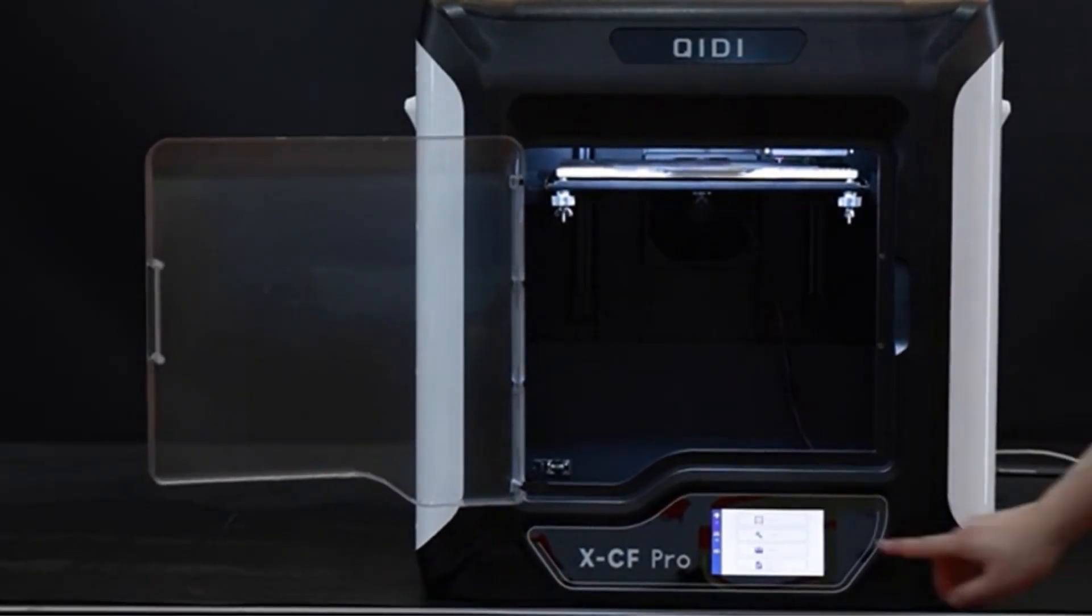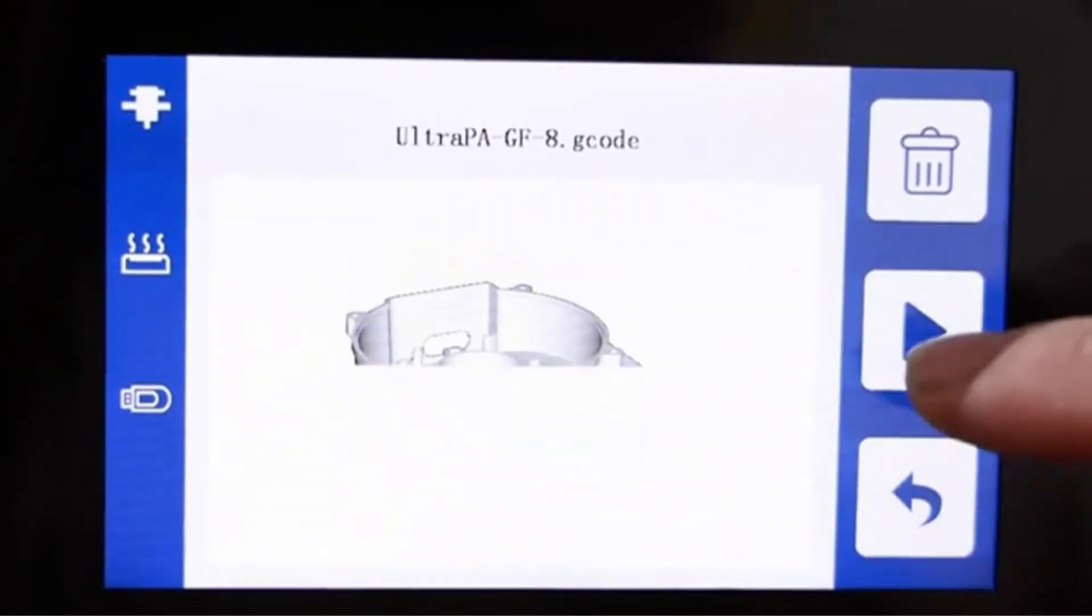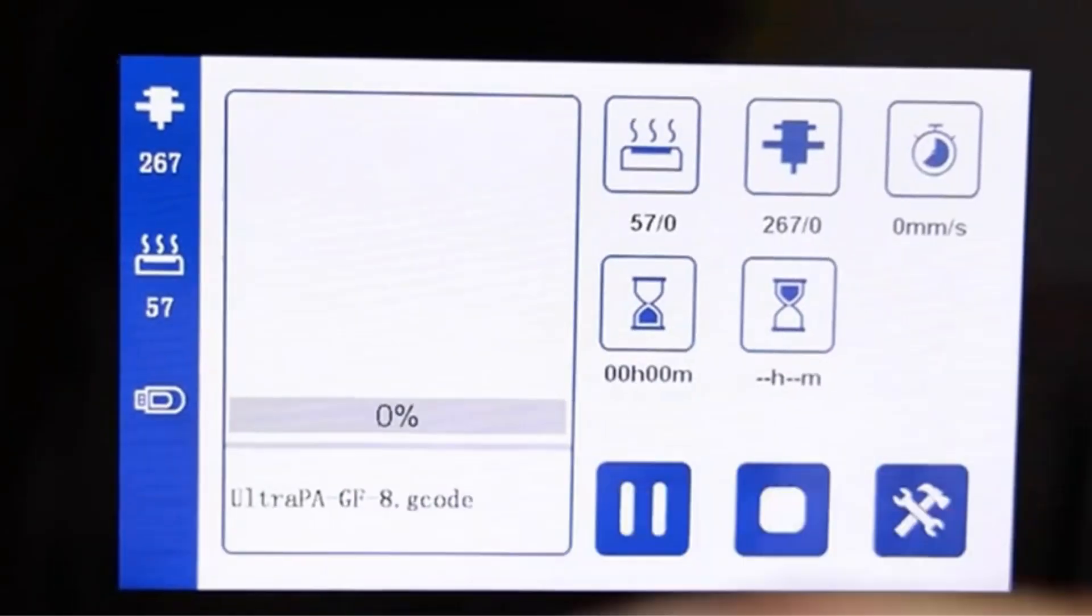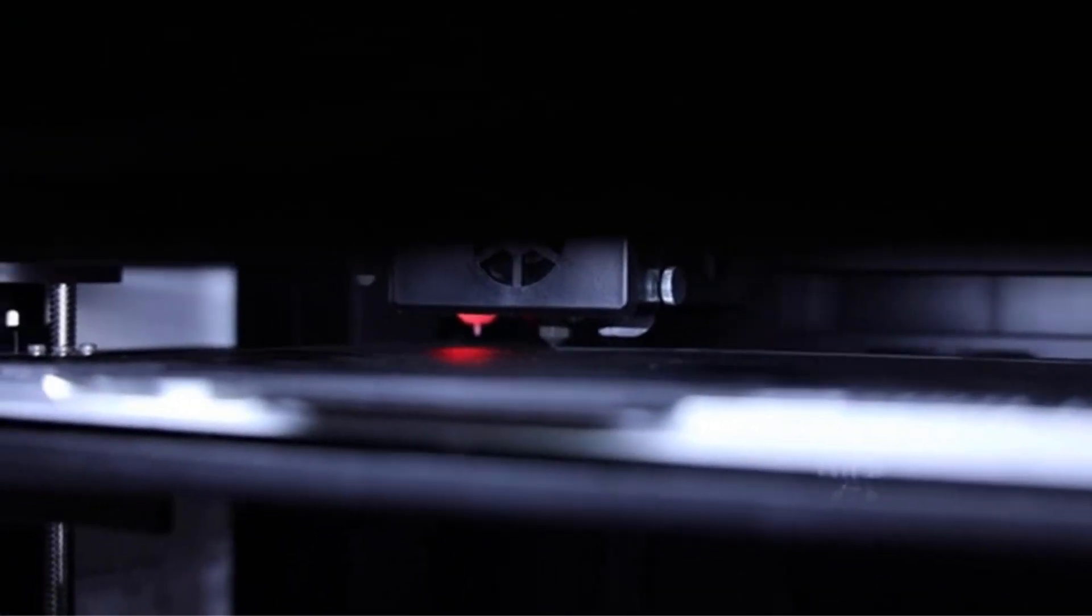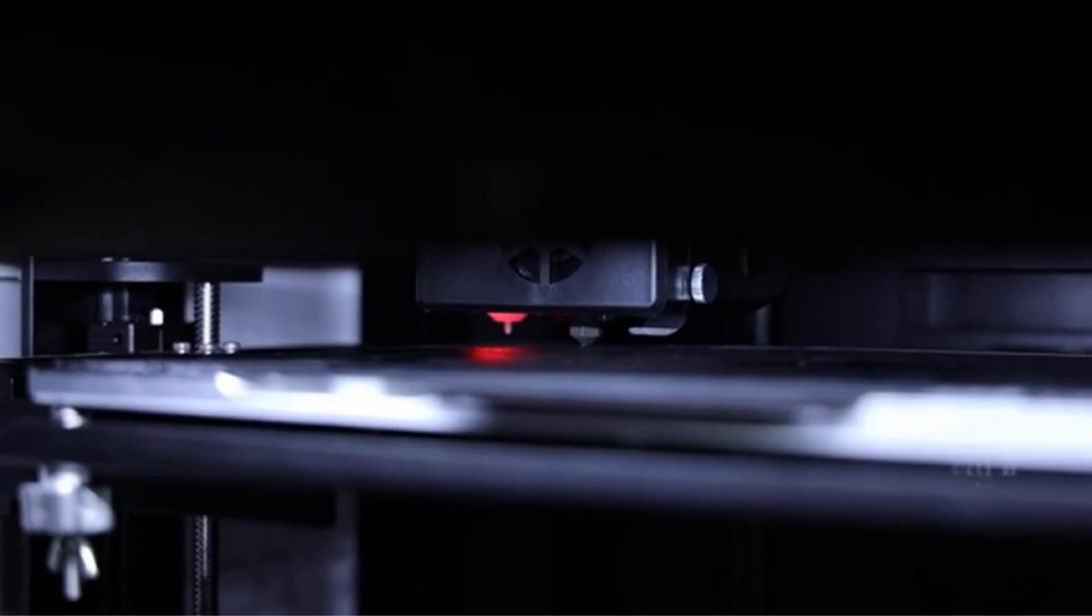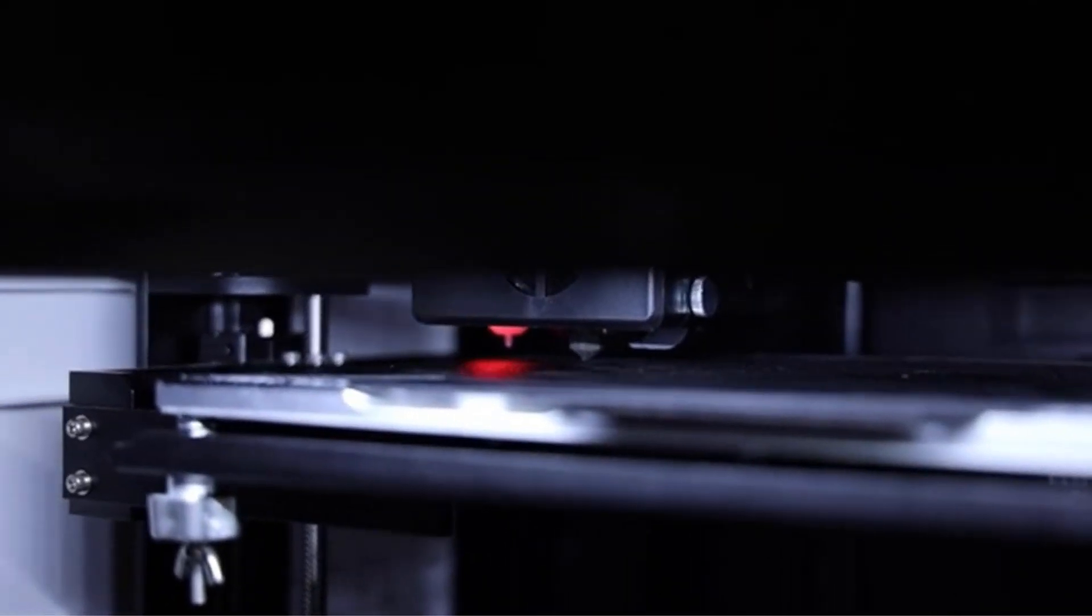We also like the proprietary browser-based Eiger cloud slicing software provided alongside the Markforged Mark II. The Eiger slicer software strikes a careful balance between ease of use and advanced options to hone in on the subtleties of producing high-quality parts.